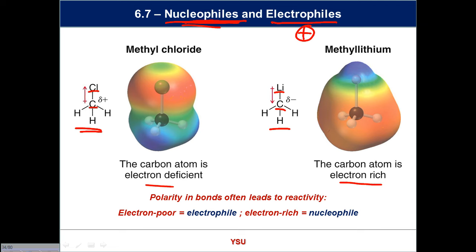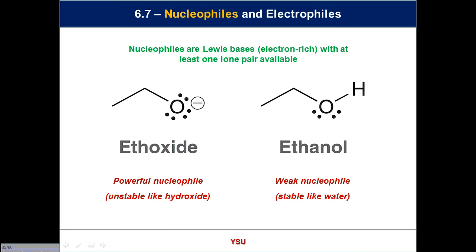The electron-poor species is the electrophile; the electron-rich species is the nucleophile. Spend five minutes letting that sink in — it's the language we use from now on. The key definitions: electron-poor = electrophile, electron-rich = nucleophile. What do you think is more reactive — something unstable or something stable? Unstable. Unstable means too much energy, too reactive.